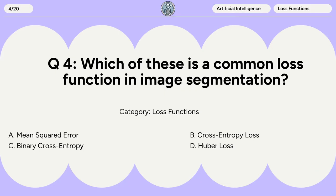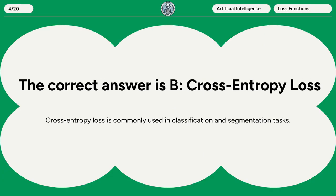Question 4. Which of these is a common loss function in image segmentation? A. Mean Squared Error. B. Cross Entropy Loss. C. Binary Cross Entropy. D. Huber Loss. The correct answer is B: Cross Entropy Loss. Cross Entropy Loss is commonly used in classification and segmentation tasks.